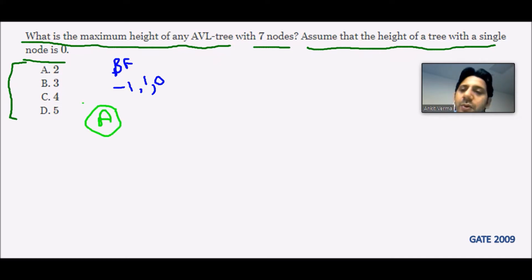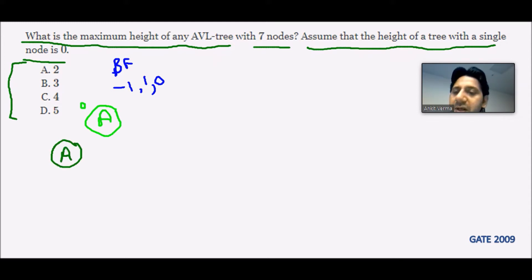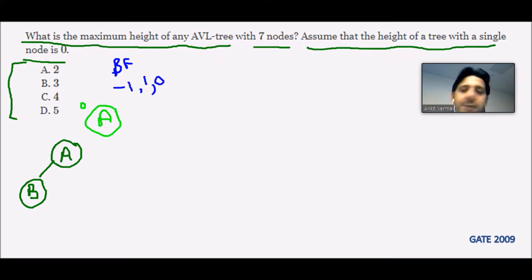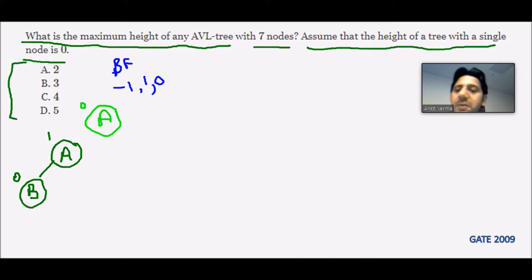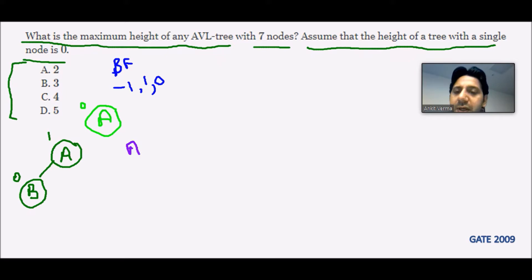The balancing factor of node A is zero because there is nothing on the left and nothing on the right. Now inserting one more node B to the left — the balancing factor of A becomes one minus zero which is one, still balanced. Next, adding one more node C to the left.